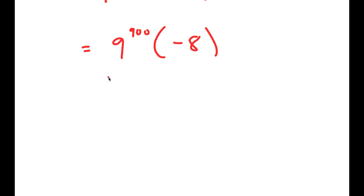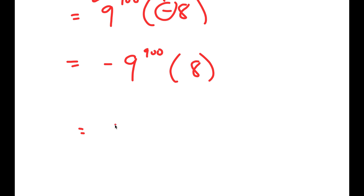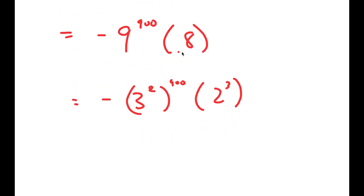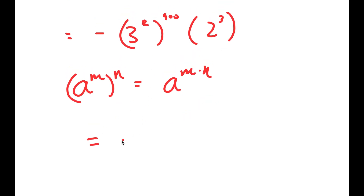Now from here, I said I was going to simplify this as much as possible. We can't really get the exact value because 9 to the power of 900 is such a big number. However, what we can get is the simplified value. So I'm actually going to move this negative sign to the front, and I get negative 9 to the power of 900 times 8. This gives me negative 3 squared to the power of 900 times 2 to the power of 3. Using the exponential property that a to the power of m to the power of n equals a to the power of m times n, I get negative 3 to the power of 1800 times 2 to the power of 3.